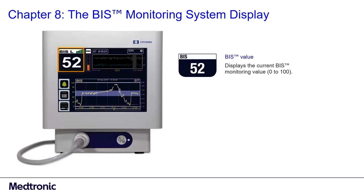The BIS value is represented as a number between 0 and 100. Although raw EEG data is acquired and displayed on the screen in real-time, the BIS monitoring value is calculated as a rolling average, or smoothed, using a moving window of time. This smoothing prevents excessive fluctuations.